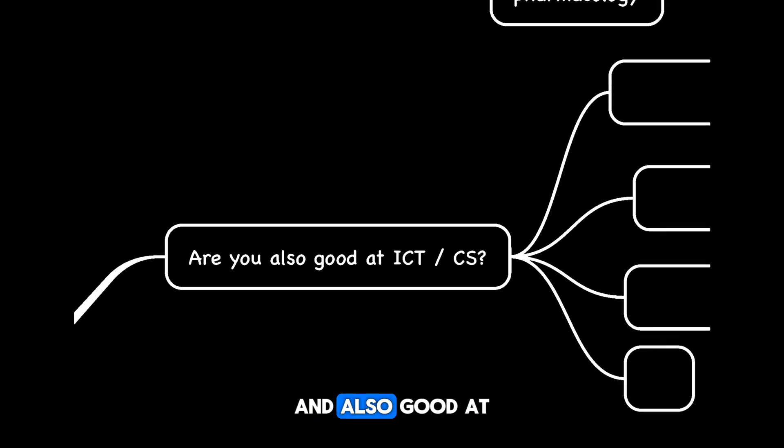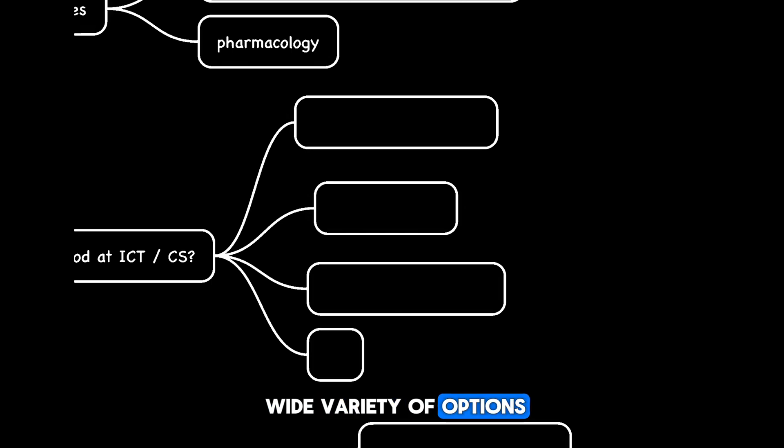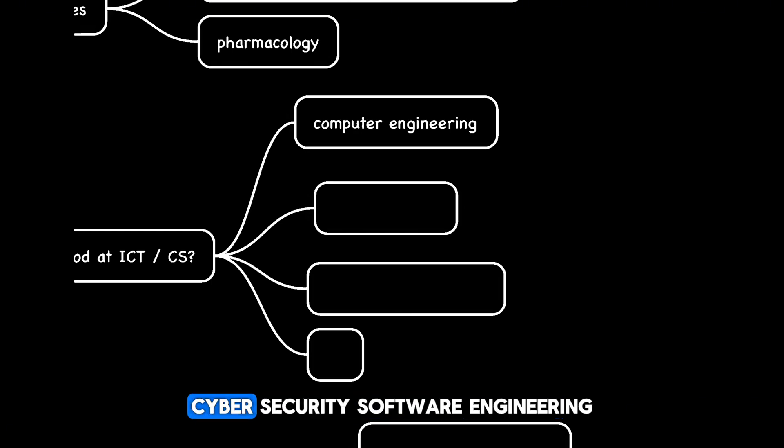What if you're good at math and also good at computer science? Here you have a wide variety of options, including computer engineering, cybersecurity, software engineering, and artificial intelligence.